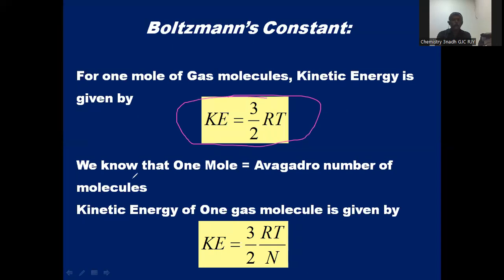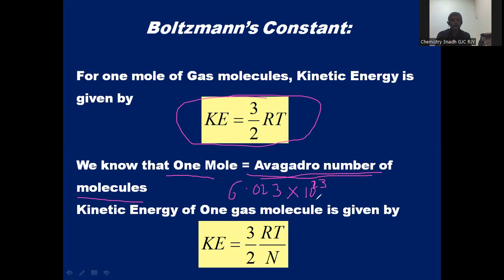We know that 1 mole corresponds to Avogadro's number of molecules. 1 mole of any gas consists of Avogadro's number of molecules of that gas. Avogadro's number is 6.023 × 10²³. So if we consider 1 mole of gas, kinetic energy = 3/2 RT, and for a single molecule, kinetic energy = 3/2 RT/N.